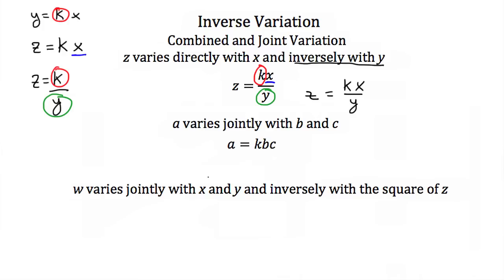If a varies jointly with b and c, joint variation means both are direct variations. So a equals k times b, and a equals k times c. Combining these gives a is equal to k times bc.